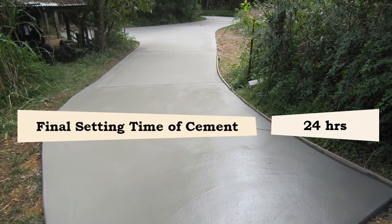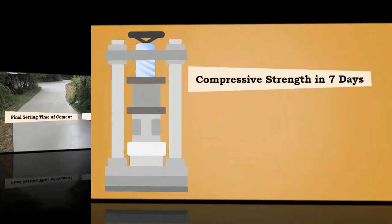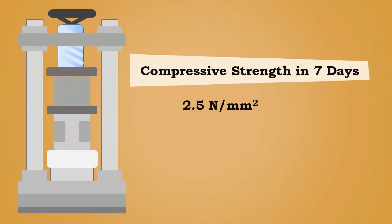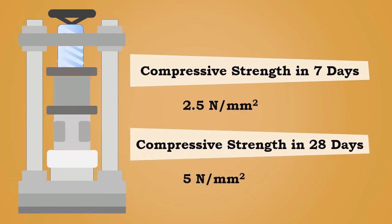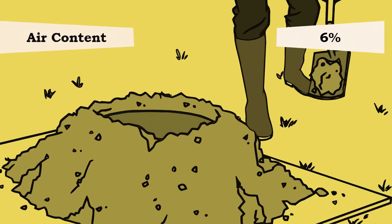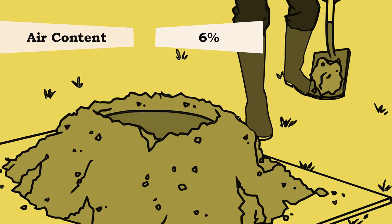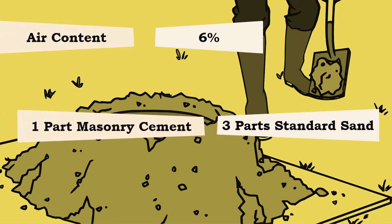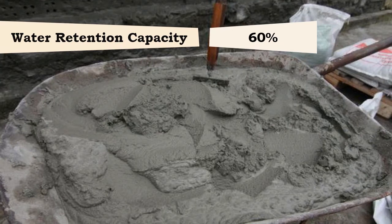The compressive strength of masonry cement after seven days is 2.5 N/mm² and after 28 days is 5 N/mm². The air content of mortar should be 6 percent when composed of one part masonry cement and three parts standard sand by volume.